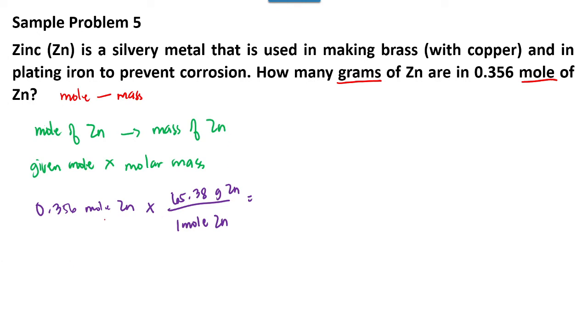Okay, so cancel the unit moles. The target is grams, right? So if we calculate: 0.356 times 65.38 over one, so we will have 23.3 grams of zinc.